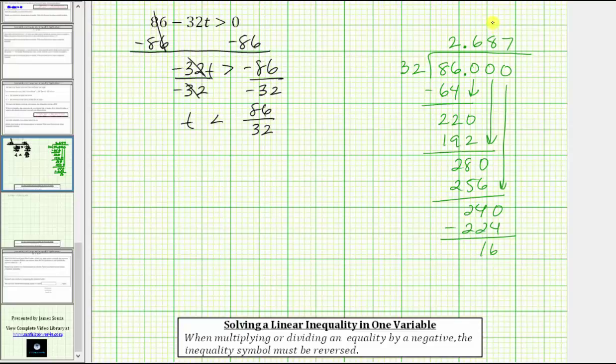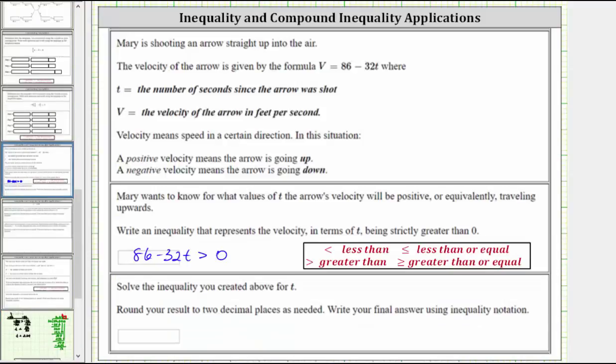The eight is in the second decimal place, and the digit to the right, the seven, indicates to round up. And therefore, t is approximately 2.69. And our inequality is t is less than 2.69. So going back to our problem, we now know the solution to the inequality is t less than 2.69, which is when the velocity is positive or the arrow is moving upward.